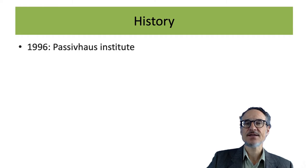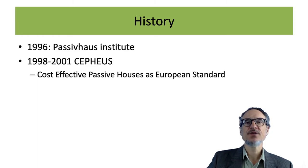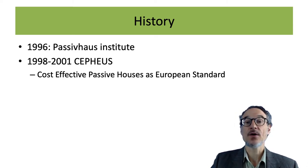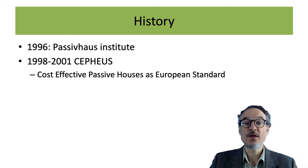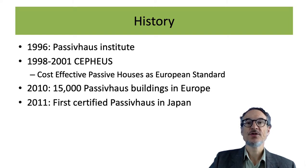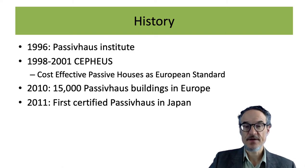In 1996, the Passive House Institute was started. Between 1998 and 2001, they developed the standard around Europe, looking at different houses from Finland in the north down to Spain in the south, examining different climates and what's cost effective for building. As of 2010, there were 15,000 Passive House buildings in Europe. The first certified Passive House in Japan was in 2011, and there are a few Passive Houses in Japan.